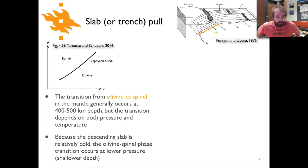Now here's the key concept for the second part of the slab pull force, and that is what's shown here in the figure of the olivine to spinel phase transition. This generally takes place at depths of about 400 to 500 kilometers depth in the mantle.